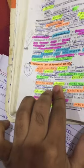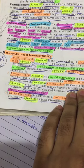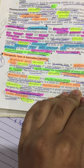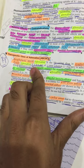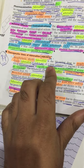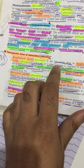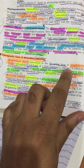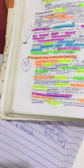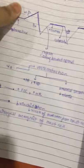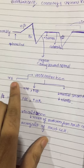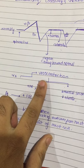First, anaphylactic shock. Adrenaline is a life-saving drug for anaphylactic shock. We give 0.3 to 0.5 ml of adrenaline IM, which is a 1:1000 solution — 1 mg per ml — administered intramuscularly. It will act on the alpha-1 receptor, causing vasoconstriction.